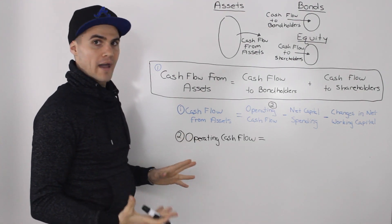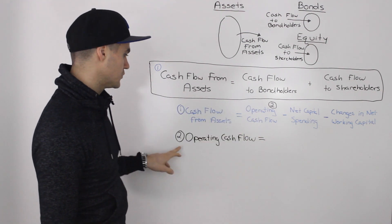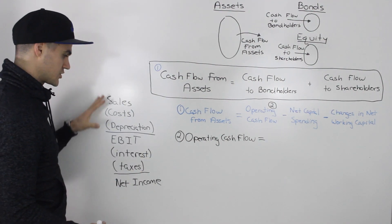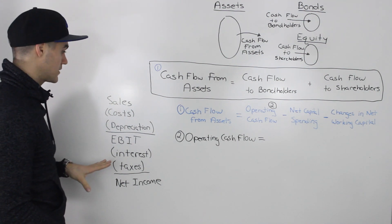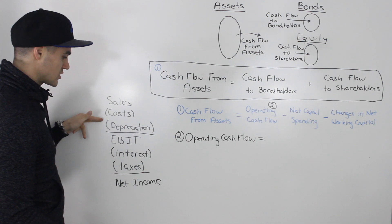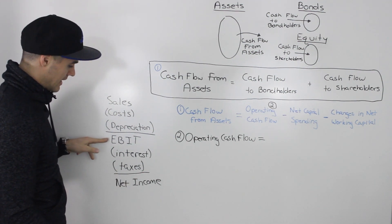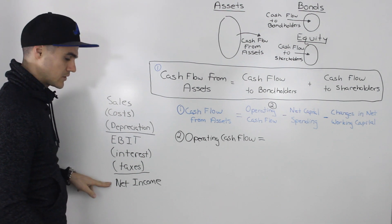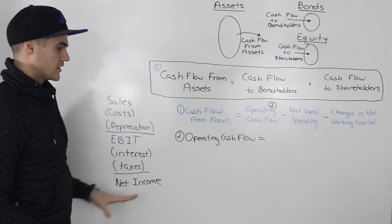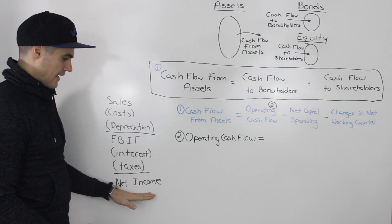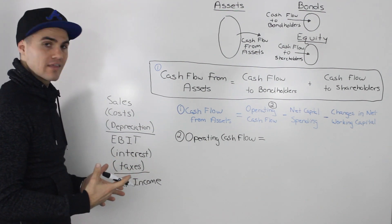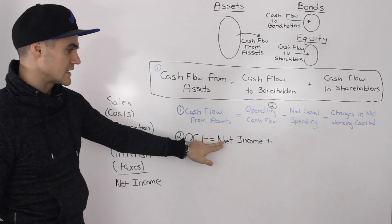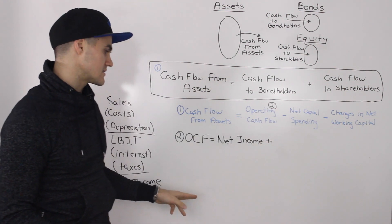The first component of cash flow from assets I'll explain is operating cash flow — footnote two. The best way to explain operating cash flow is through an income statement. We have sales minus costs minus depreciation, which gives us earnings before interest and taxes (EBIT). Then we subtract interest and taxes to get net income. To derive operating cash flow, you start with net income and add back any expenses that weren't operating cash flows.